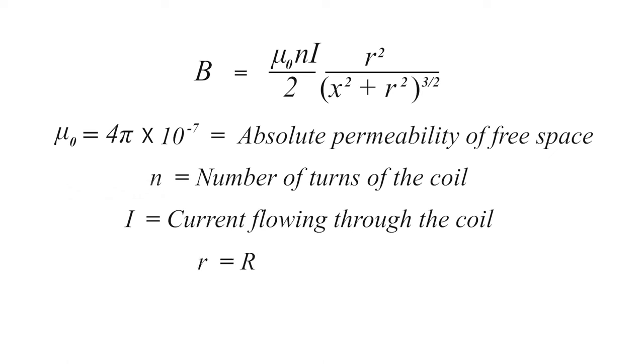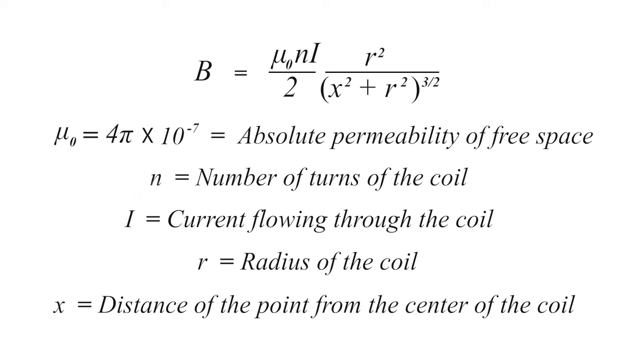where n is the number of turns of the coil, i is the current flowing through the coil, r is the radius of the coil, and x is the distance of the point from the center of the coil.